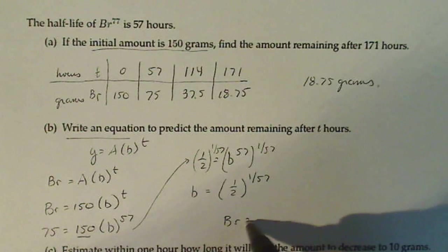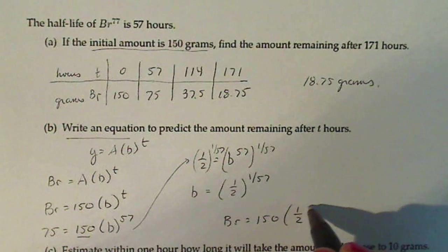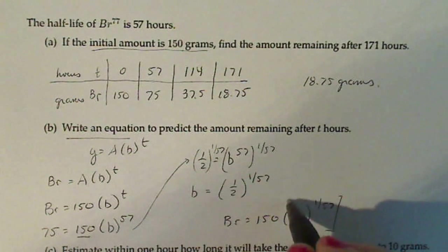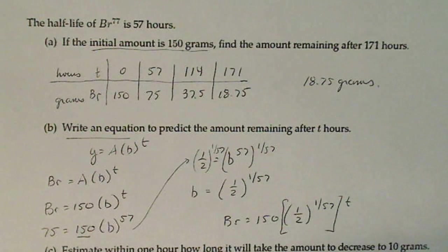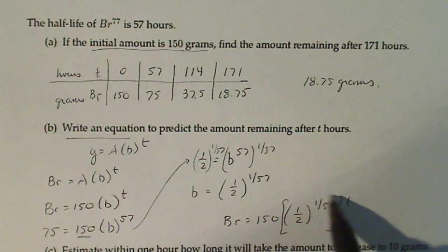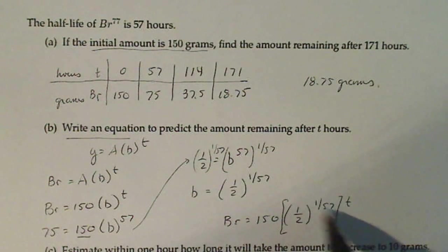So in our case, Br is equal to 150 times one-half raised to the one over 57 raised to the t. Now, understanding our rules of exponents, if I want to simplify this, I just multiply one over 57 times t, which simplifies to t over 57.